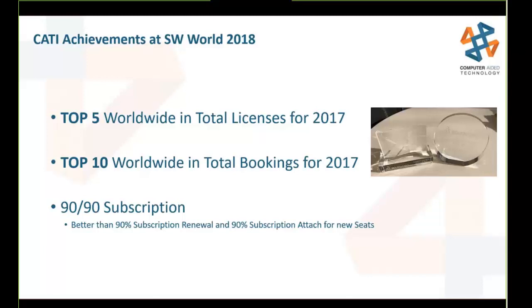CATI got some awesome achievements at SolidWorks World this year: named top five worldwide in total licenses for 2017, top ten worldwide in total bookings for 2017, and we made the 90-90 subscription club — meaning better than 90% subscription renewal and better than 90% subscription attach rate for new seats of SolidWorks.